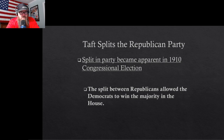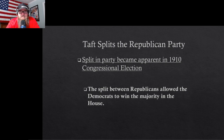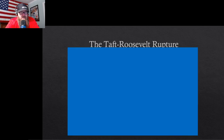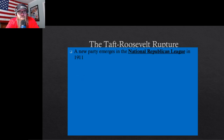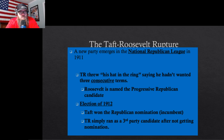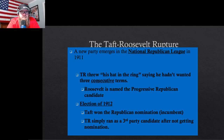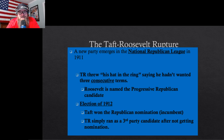The 1910 midterm election is when the split happens. Democrats won the majority in the House and then won the next presidential election. Roosevelt running as a third party candidate caused the Republicans to lose — third party candidates take votes away from one side, not both. That's how Wilson gets elected.